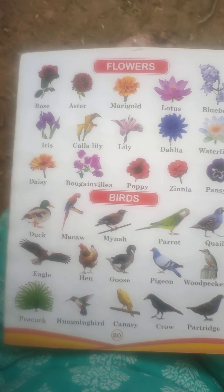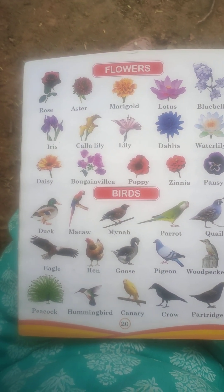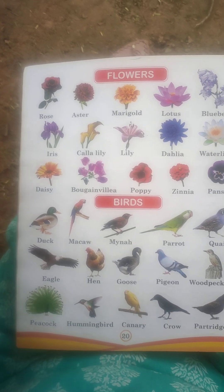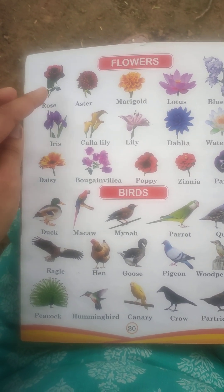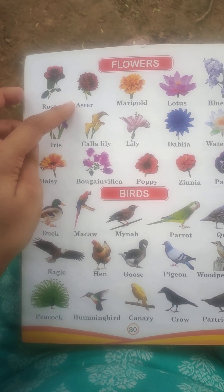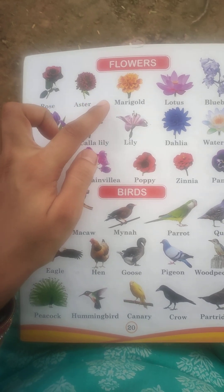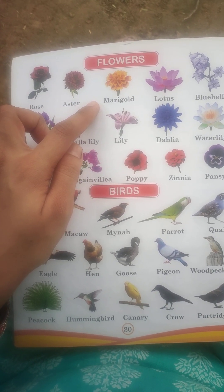Okay kids, today we learn about flowers and birds. First flower is rose. Second is aster. Third is marigold. Fourth is lotus.